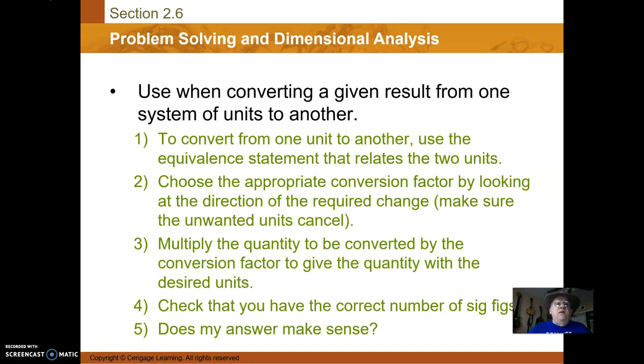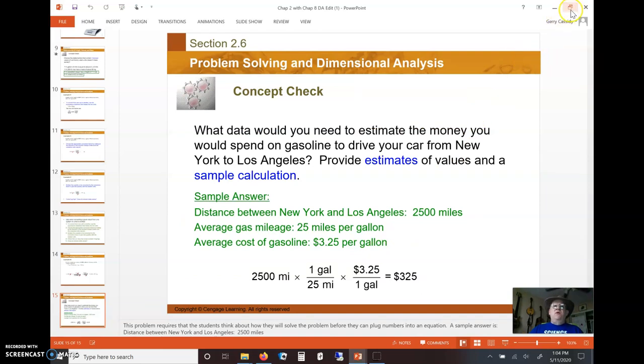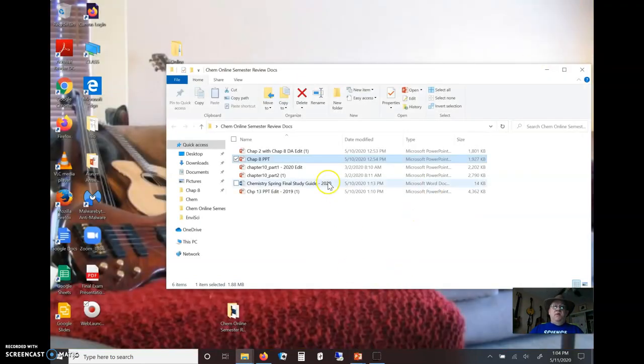Dimensional analysis: converting from one unit to another, like from moles to grams. We did a lot of that. You can do it for going from Kelvin to Celsius temperature. That's Chapter 2. This was an introduction to Chapter 8, so let's go to Chapter 8.